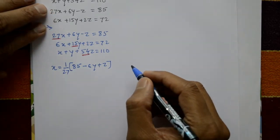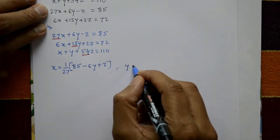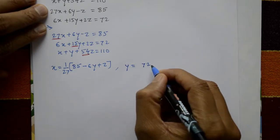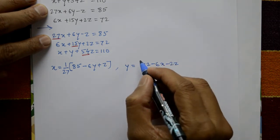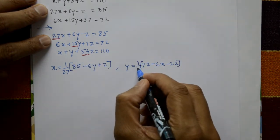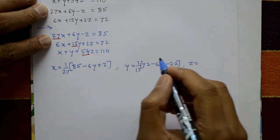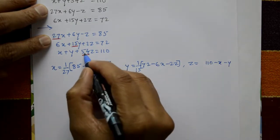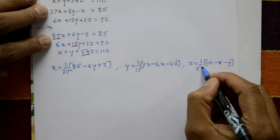From the second equation, express y: shift x and z to the right-hand side, giving y = (1/15)(72 − 6x − 2z). And from the third equation, express z: shift x and y to the right-hand side, giving z = (1/54)(110 − x − y).